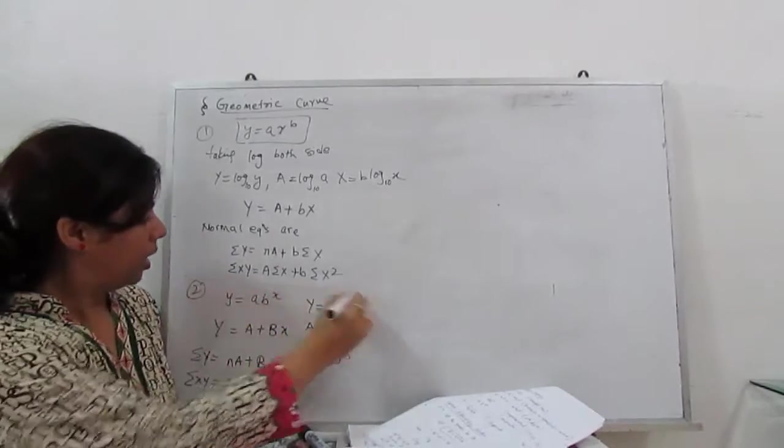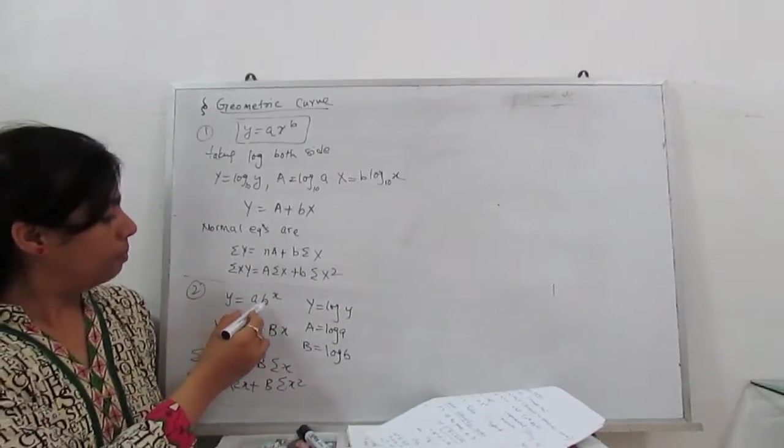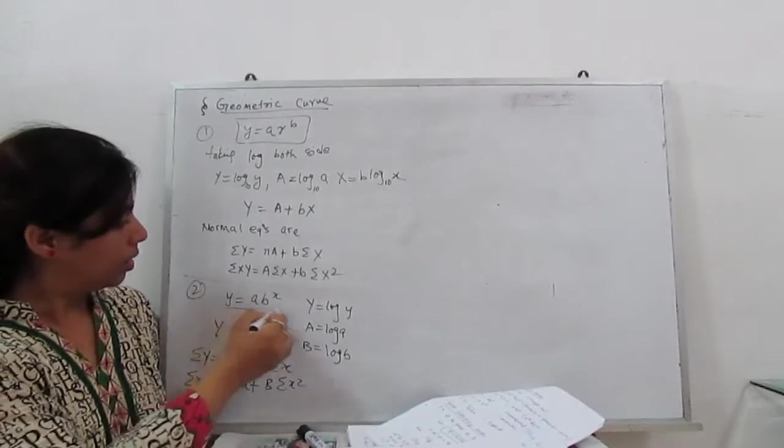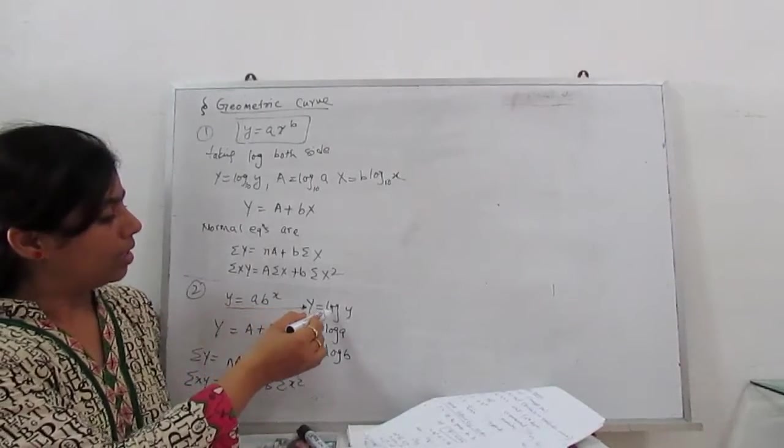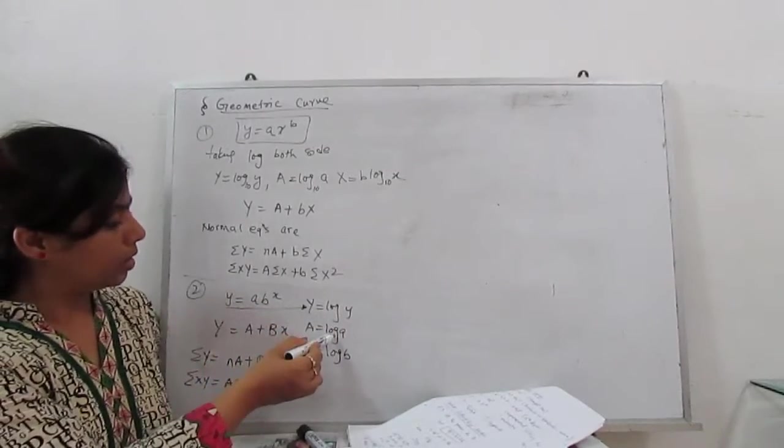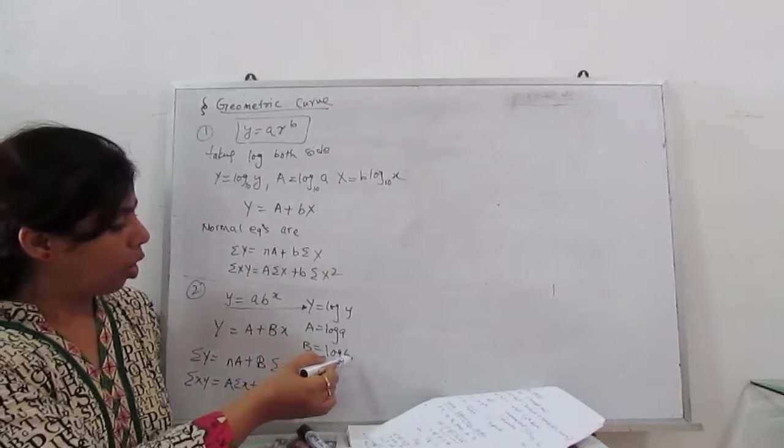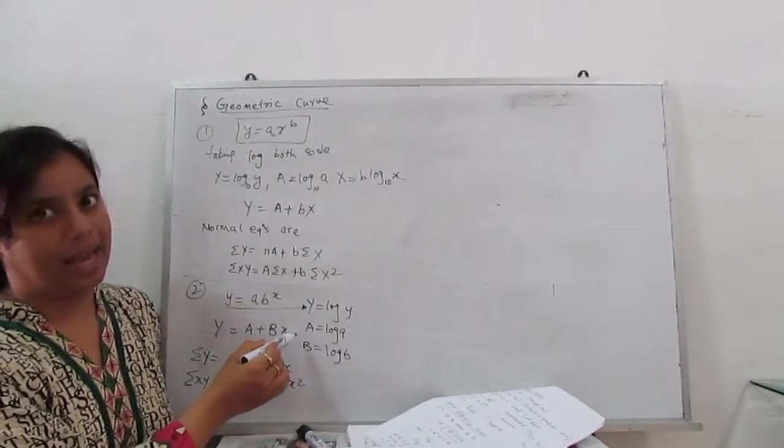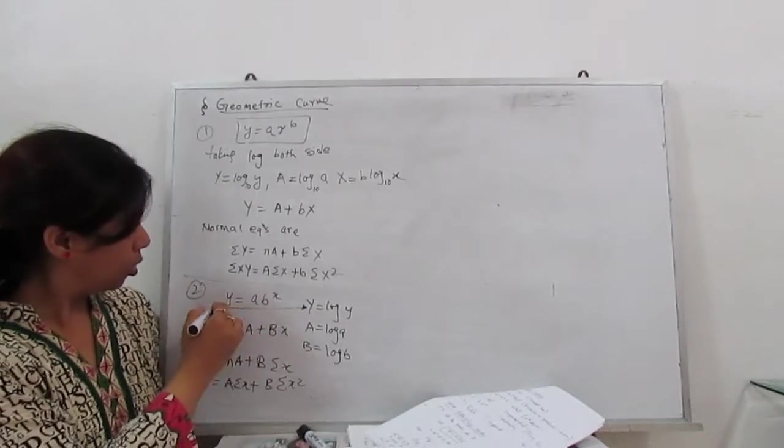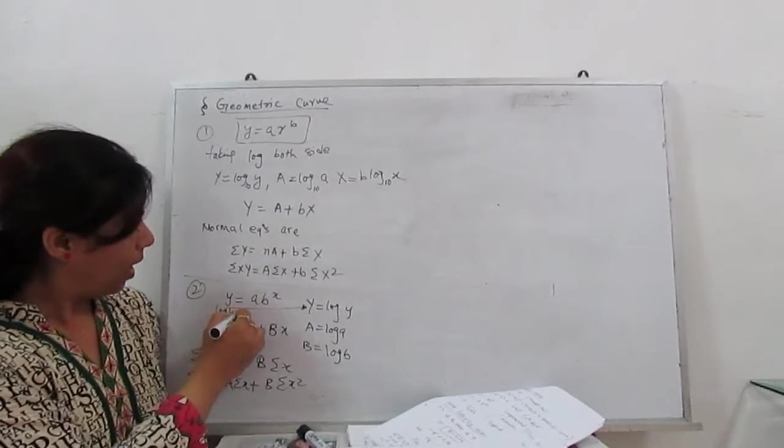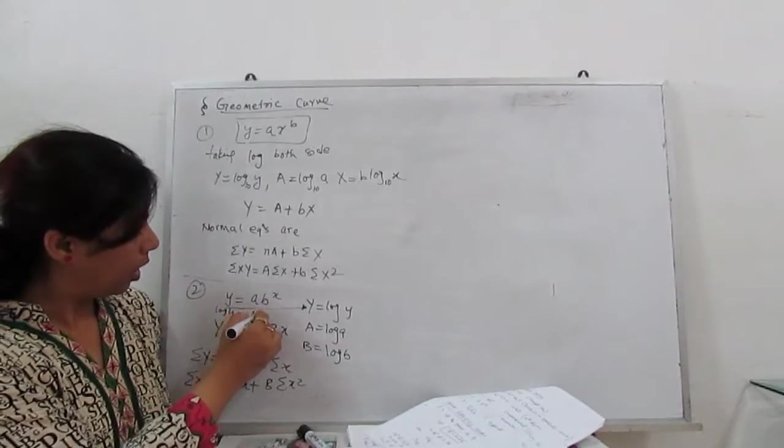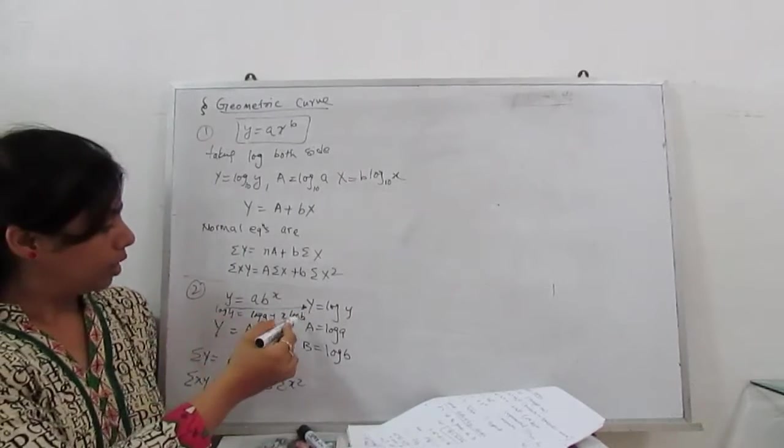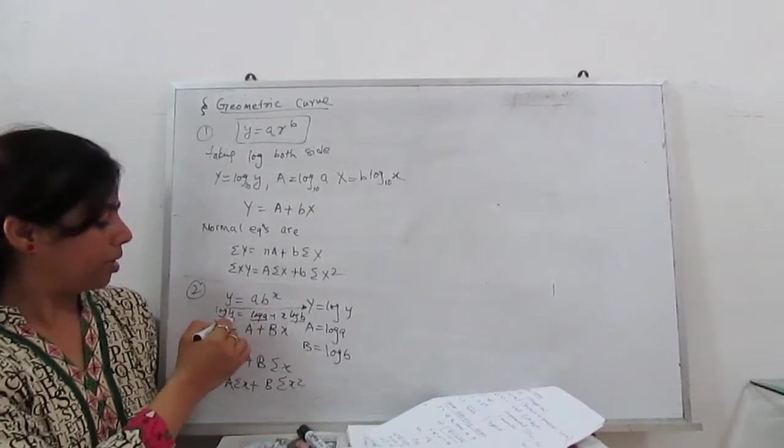Next, another form of curve is y equals a b to the power x. For this also, same, our Y taking log, capital Y is log y, capital A is log A, capital B is log b. So curve becomes Y, A, plus Bx. Because when we take antilog, it becomes log y equals log A plus x log of b.